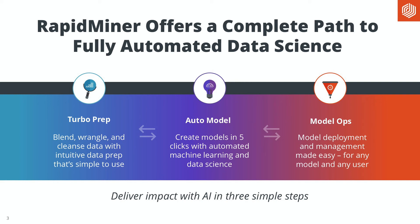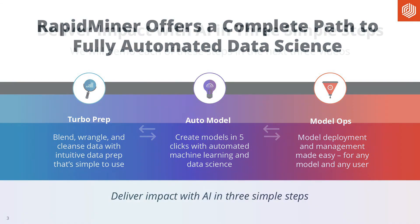AutoModel itself can go through thousands of candidates for model types and all the different parameter values and finds the optimal models for you. But after creating great machine learning models, that's not the end of the story. You need to put them into production, manage them, and we automatically create all the necessary management processes for you in workflow. So you don't need to worry about that at all.